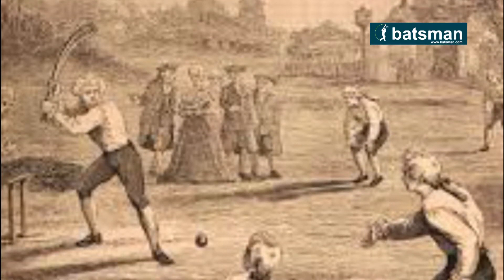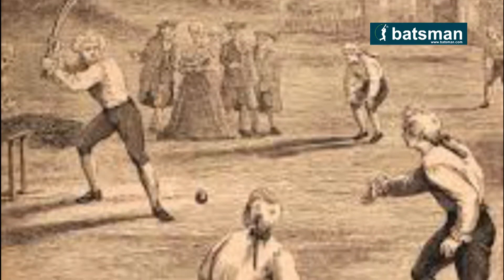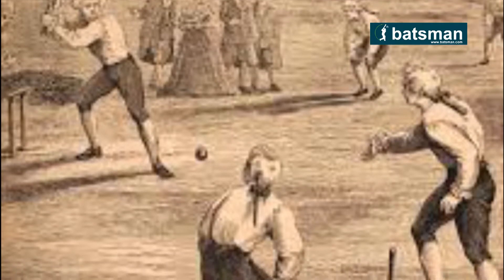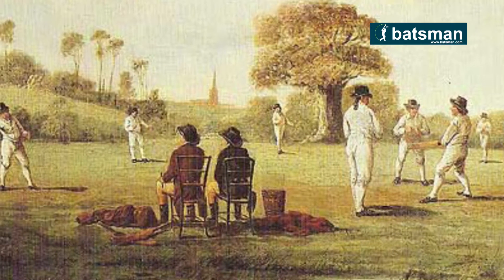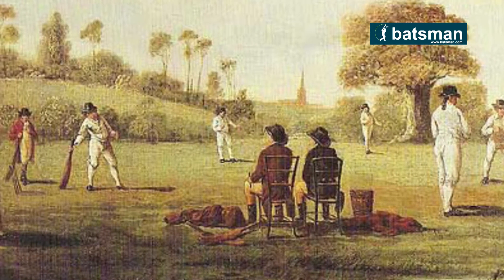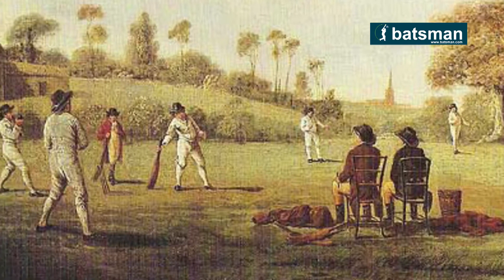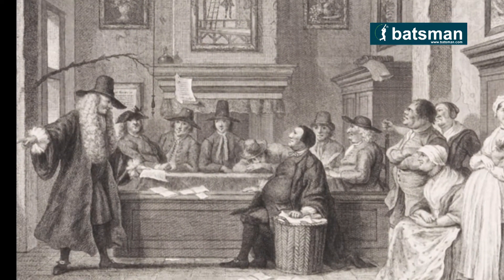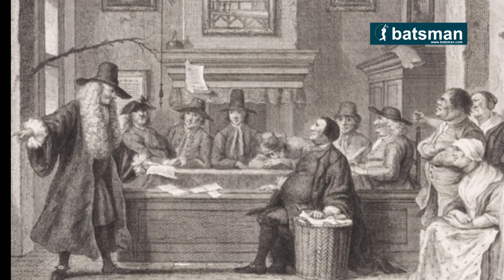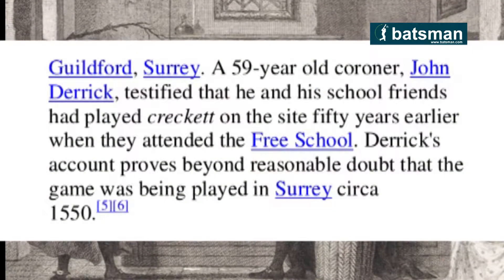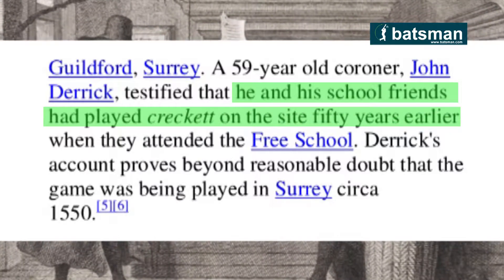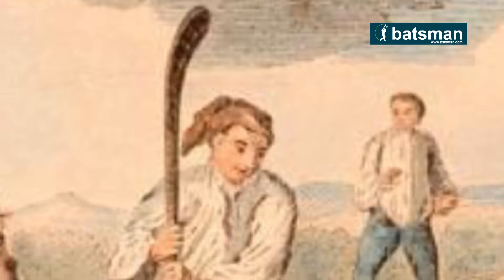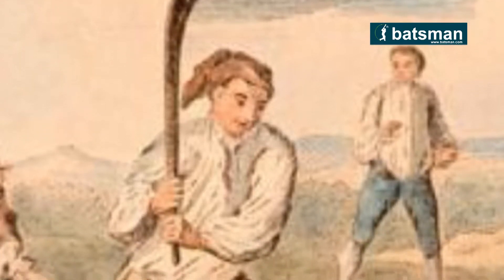The origin of cricket is unknown. Experts' opinion is that it originated in southeast England, although there are many speculations about its origin. The first definite reference is a 1597 court case in England regarding ownership of common land, which mentions cricket. The name cricket was derived from a Middle Dutch word meaning stick.